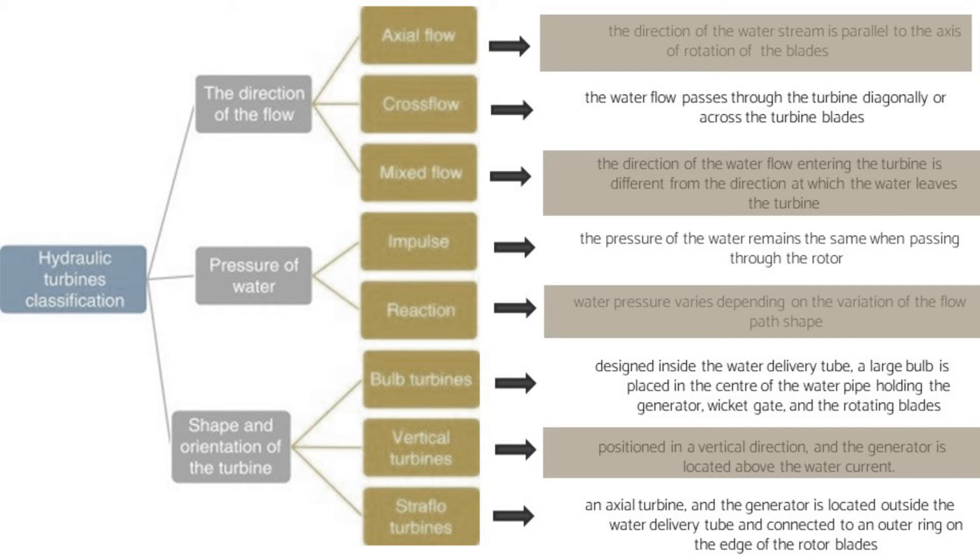For the shape and orientation of the turbine, we have bulb turbines, vertical turbines, and axial flow turbines. Bulb turbines are designed inside the water delivery tube. A large bulb is placed in the center of the water pipe holding the generator with guide vanes and rotating blades. For vertical turbines, they are positioned in vertical direction and the generator is located above the water current. For axial turbines, the generator is located outside the water delivery tube and connected to an outer ring on the edge of the rotor blades.